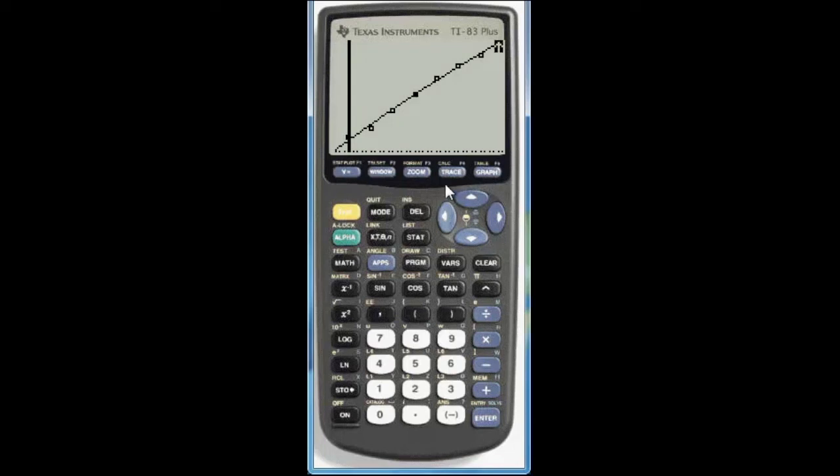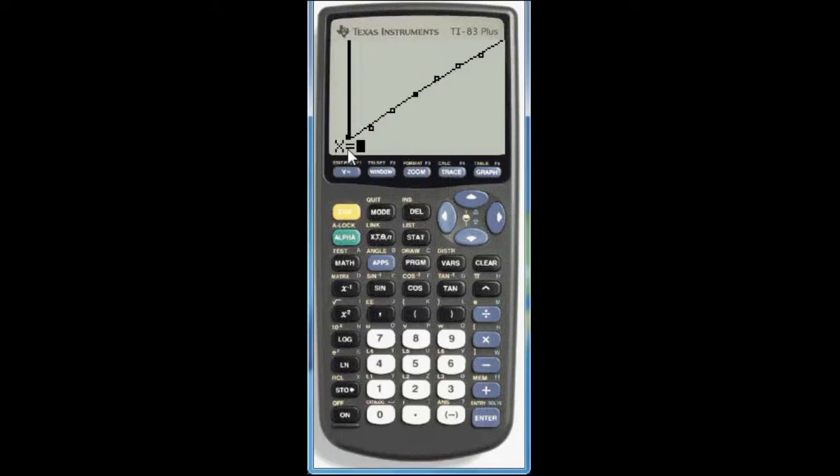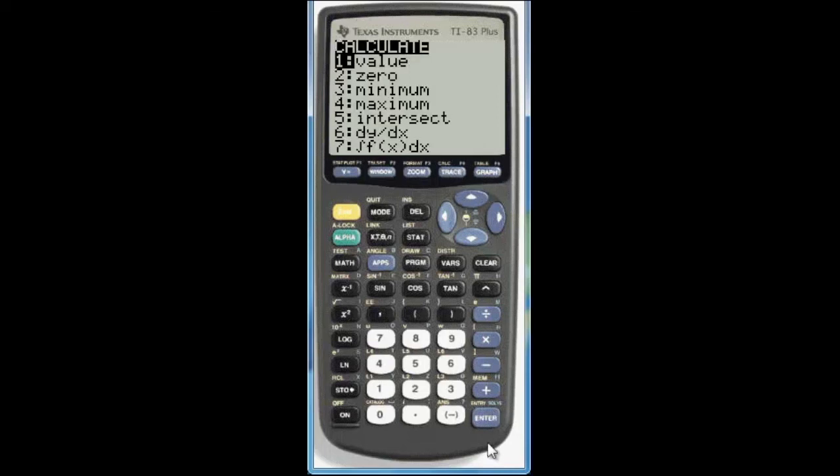Press second. And then the trace button we want to choose calc which is just above the trace button. If you look at that first option it says value. Hit enter and it will come up with x equals and the cursor will be blinking. Well we want x equals 34. We want the value of our model for the year 2004 which is at x equals 34. So enter in 34 and hit enter. And our model predicts that the CPI in 2004 would be 187.118. And that's how you would do this using the graph itself and the second calc value application.